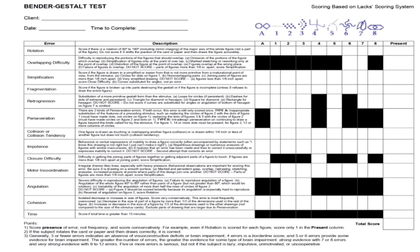After impotence comes Closure Difficulty — difficulty in getting the joining parts of figures together and getting adjacent parts of a figure to touch. Figures A, 4, and 7 have joining points. We look at how the client joined those figures — for example on card A, there is a circle and a square; how did they join them? Is there a gap in between? This is observed in the drawing. If closure difficulty error is present, write 1 in present; if not, write 0.